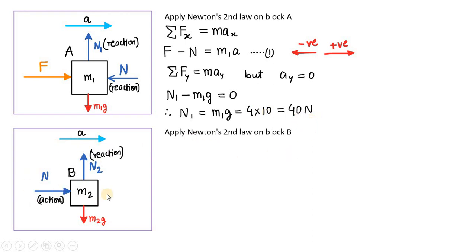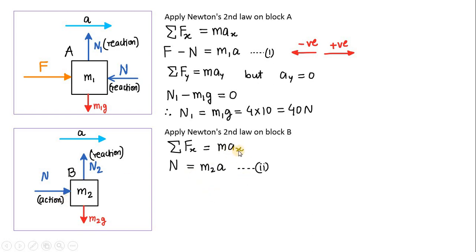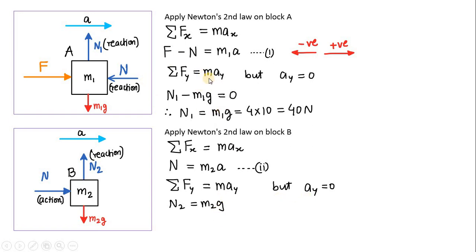Now applying Newton's Second Law on block B. In the x direction, σFx = M2·Ax. The only horizontal force on B is the normal reaction N, so N equals M2 times A — this is equation 2. In the y direction, by the same logic, N2 equals M2G, which is 6 kg times 10 = 60 Newtons.